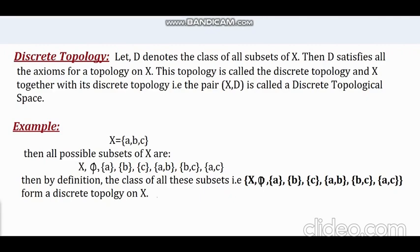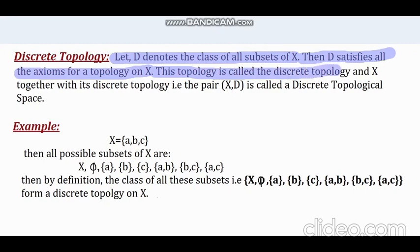First, let us get into discrete topology. Let D denote the class of all subsets of X. Then D satisfies all the axioms for topology on X. This topology is called the discrete topology. And X together with its discrete topology is called a discrete topological space.